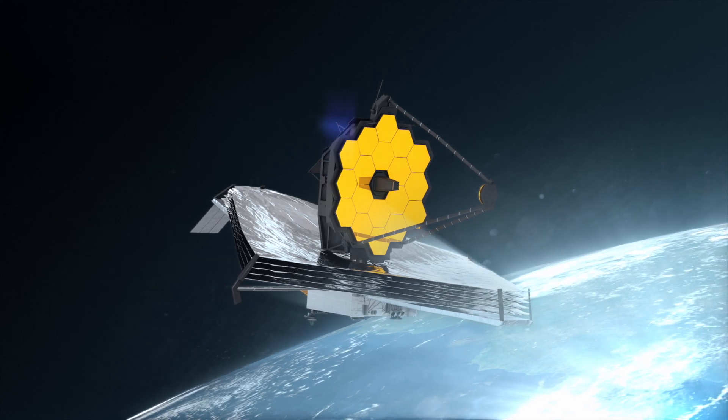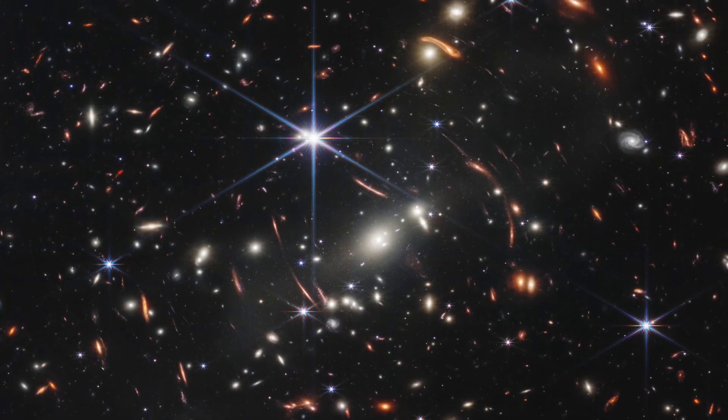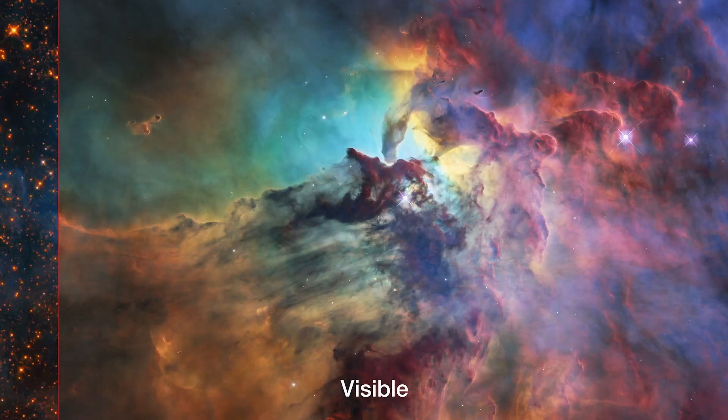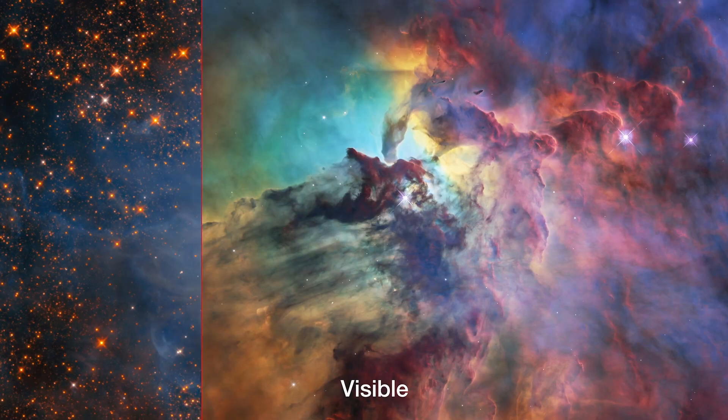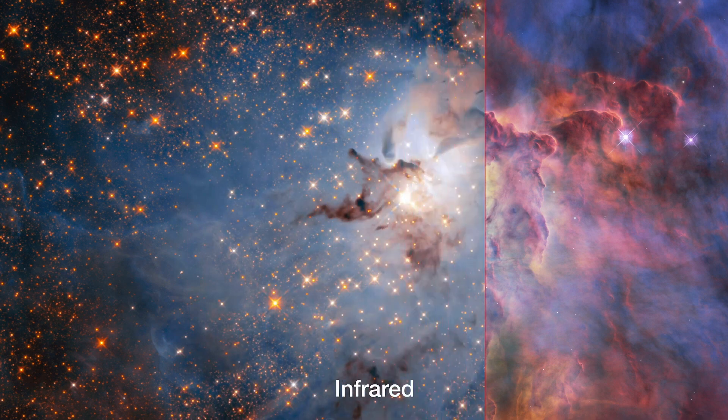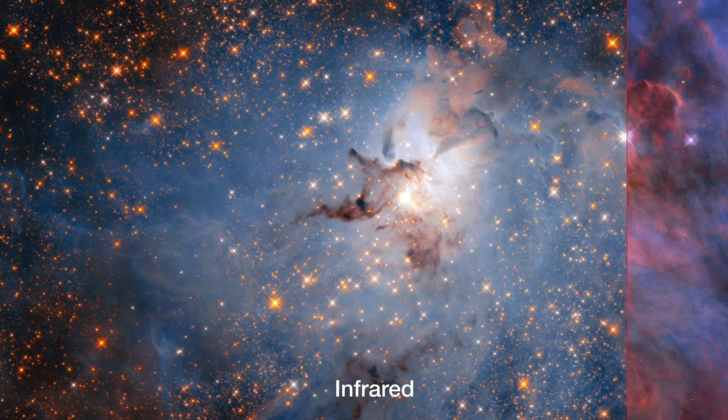The $10 billion space telescope is capable of producing such magnificent photos because, unlike the Hubble Telescope, which collects photographs in predominantly visible light, Webb captures images in primarily infrared region, exposing more details about the objects in those images than ever before.